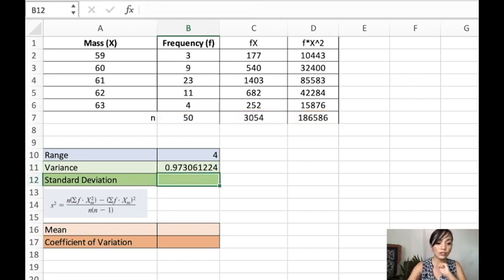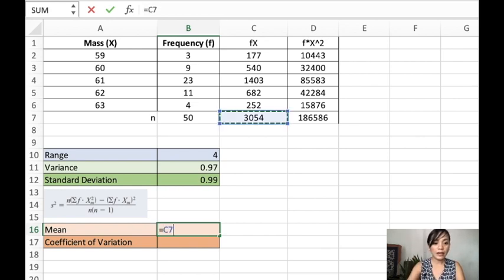The standard deviation, of course, is just the square root of variance. And that is the answer. The next one is the mean. If you still remember, to get the mean is just the sum of xf divided by the frequency. And that is the mean.